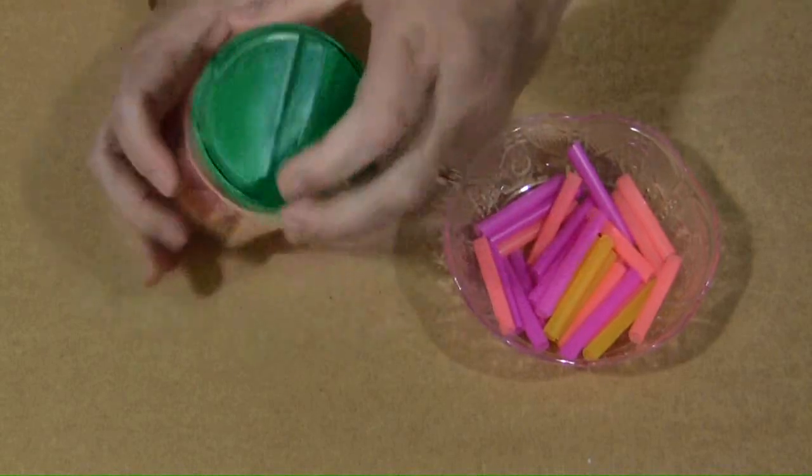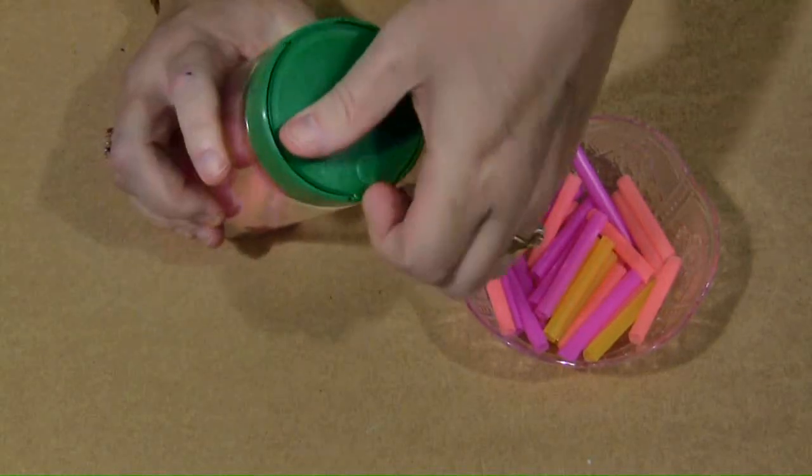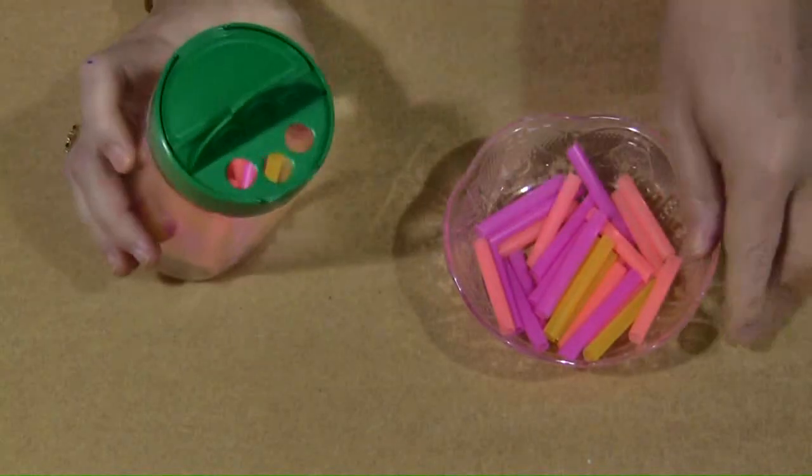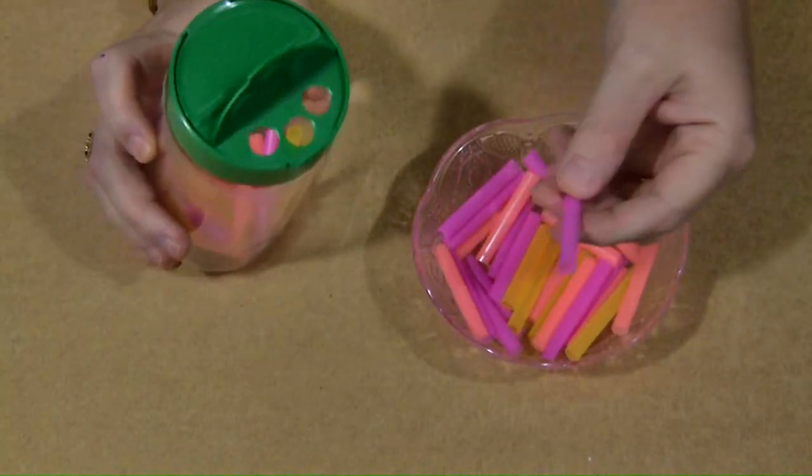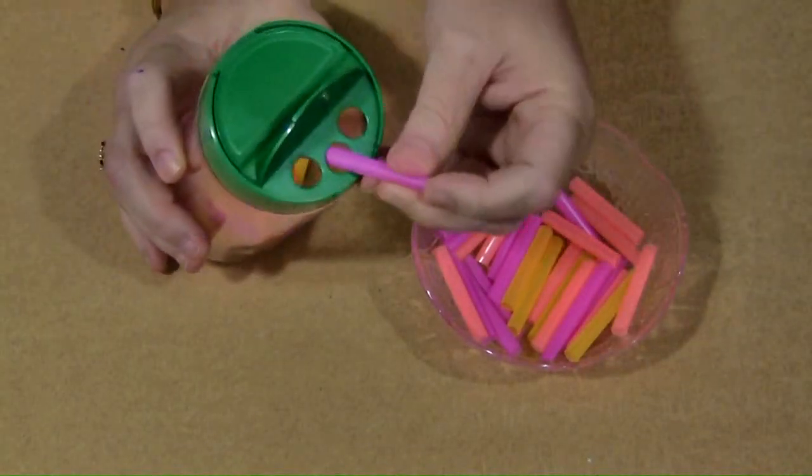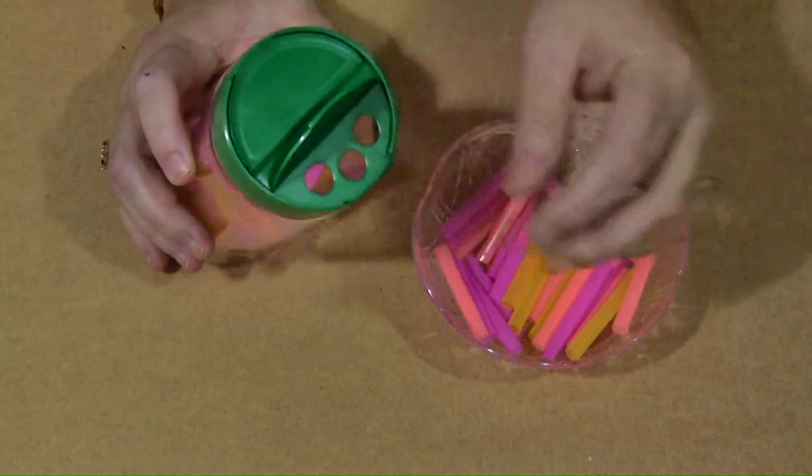So our goal is to have the children use the side with the three holes in it for fine motor skills development where they have to pick up the straw and guide it into the holes using some eye hand coordination.